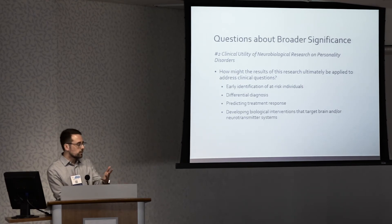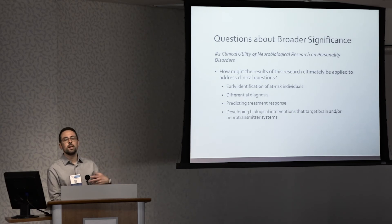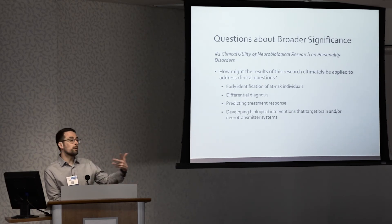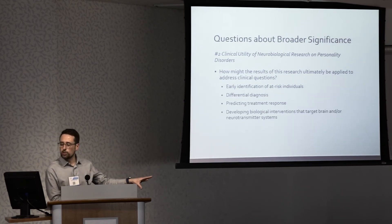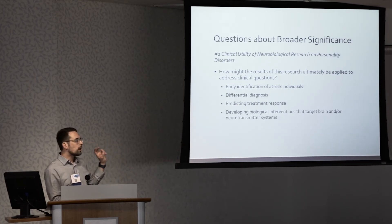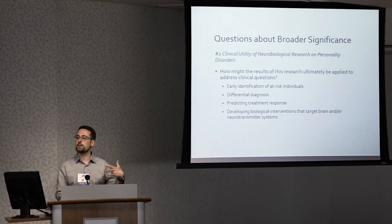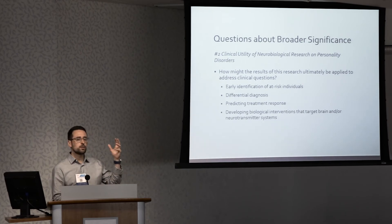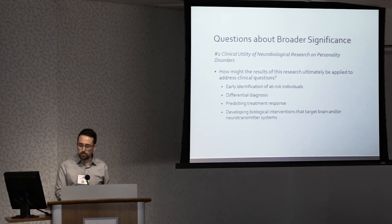We already heard a little bit about intervention and how neurobiological research can inform intervention. The research being done, especially more recently, is considering the incremental clinical utility of neurobiological findings over and above self-report conventional clinical measures — using this information to identify people who might be at risk of developing personality pathology, predicting treatment response, and identifying brain regions that might be targeted in specific ways. For example, some of my current research looks at brain stimulation using magnetic seizure therapy to impact the dorsolateral prefrontal cortex in BPD.